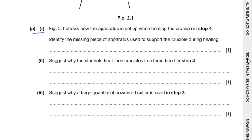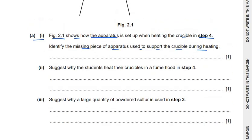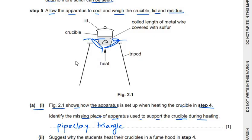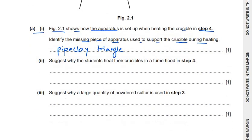Figure 2.1 shows how the apparatus is set up when heating the crucible in step 4. We need to identify the missing piece of apparatus used to support the crucible during heating. Whenever we heat a crucible, we place it on a pipe clay triangle, which has wires on it to support the crucible on the tripod stand. We never use a wire gauze when heating a crucible. So the missing piece of apparatus is a pipe clay triangle.